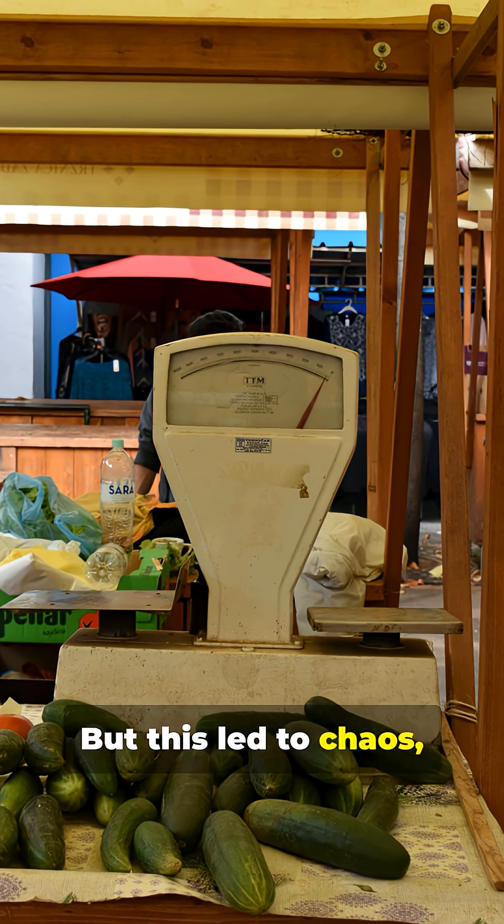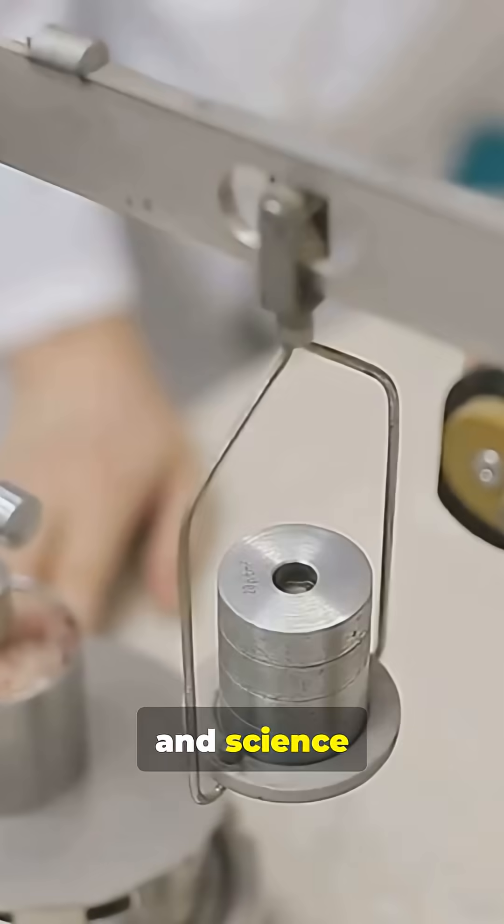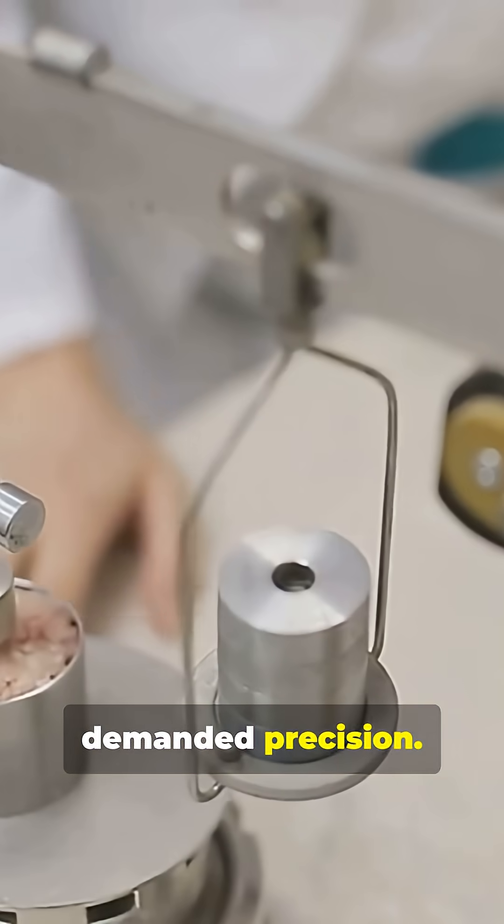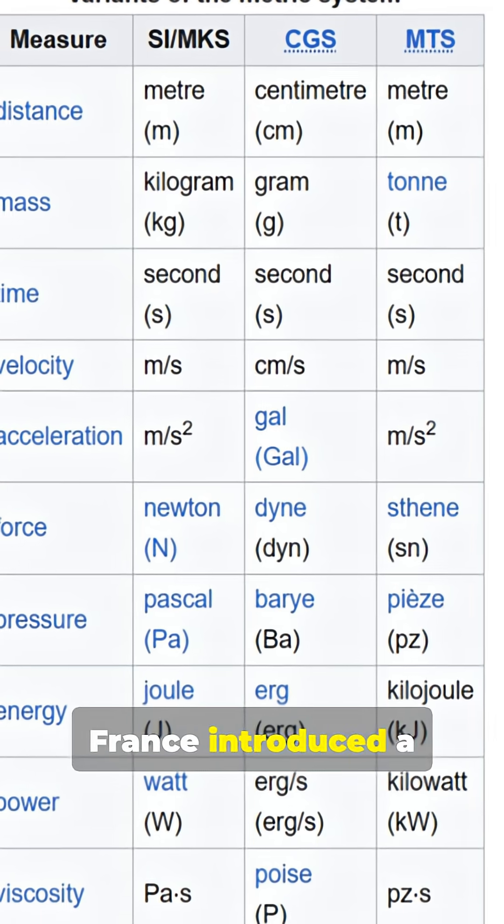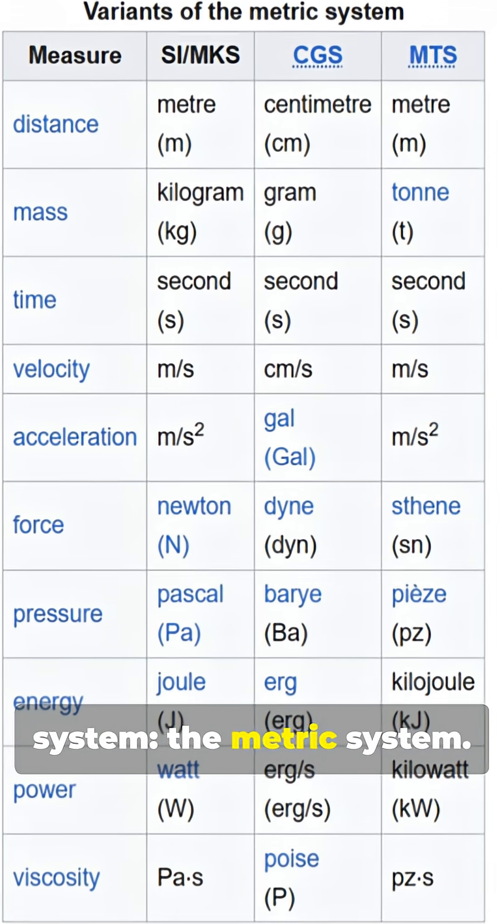But this led to chaos. Trade was inconsistent, and science demanded precision. In 1795, France introduced a new universal system: the metric system.